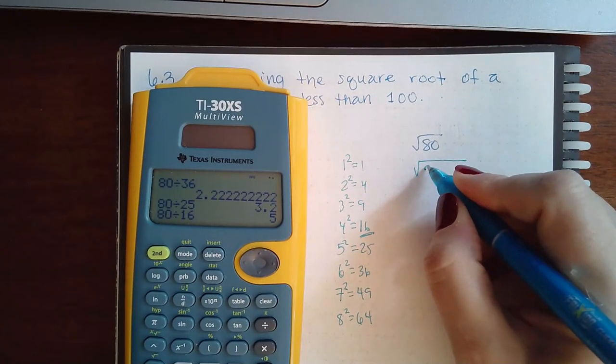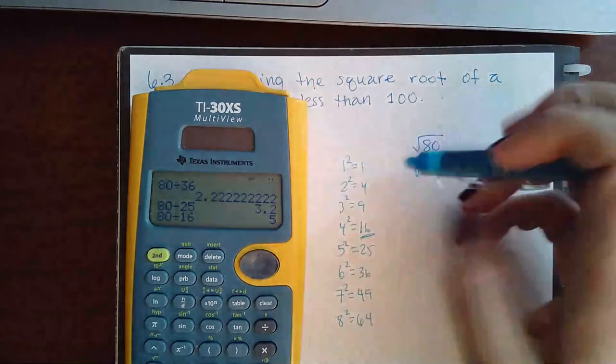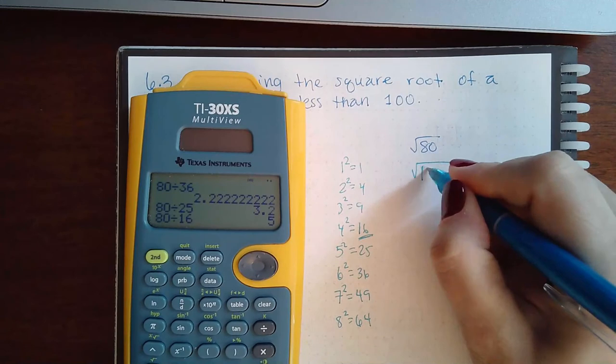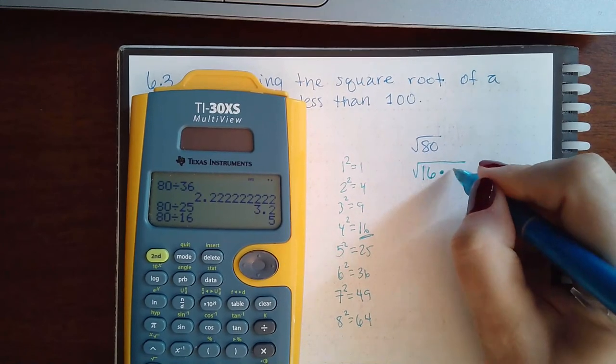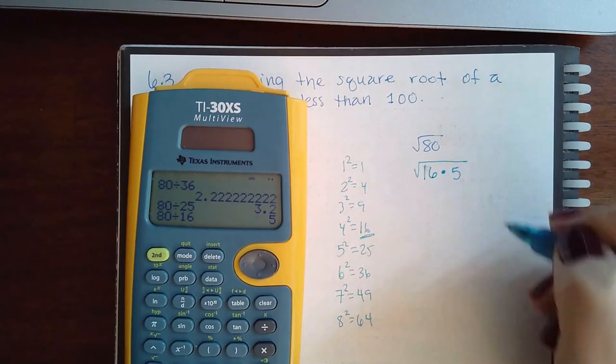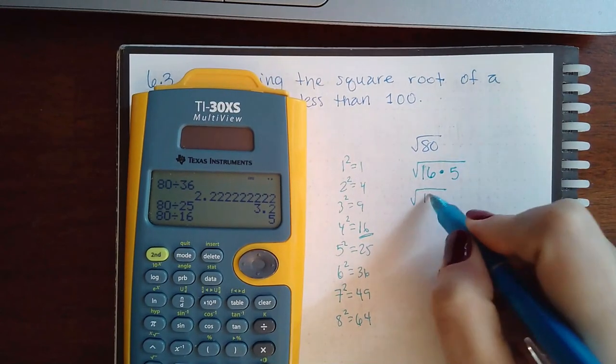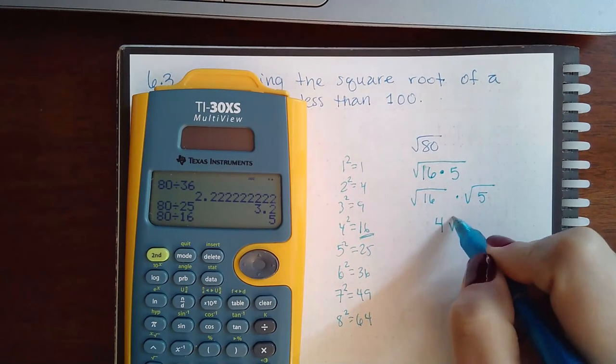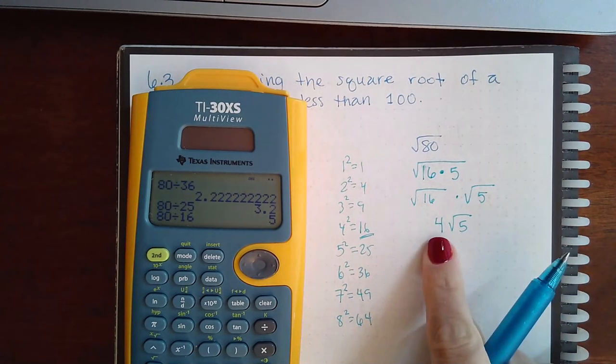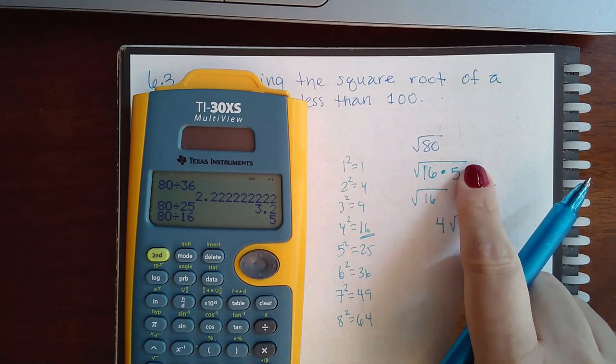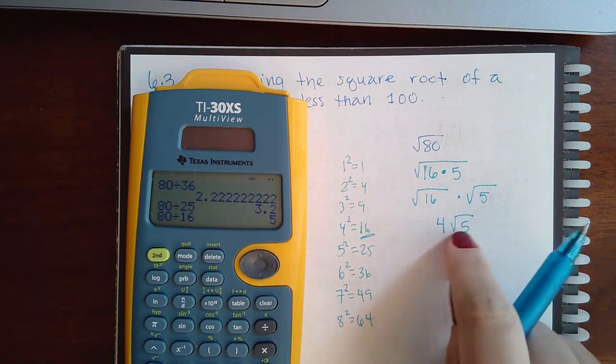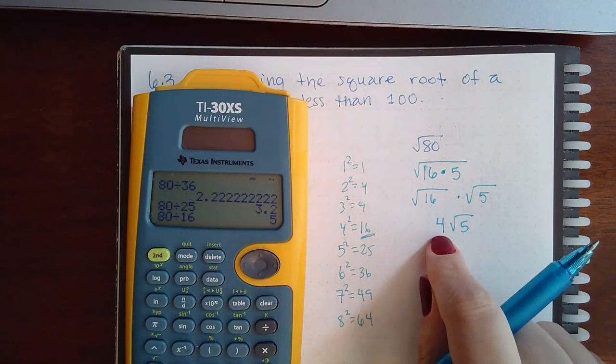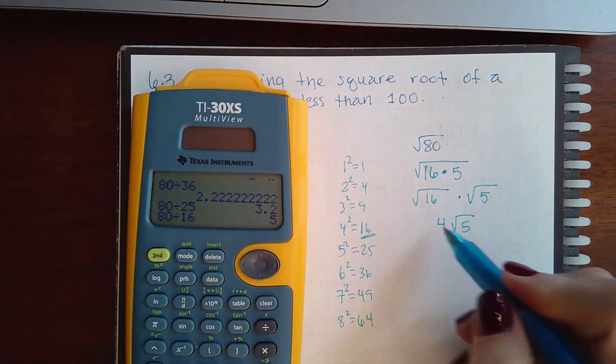This is the largest perfect square that goes into 80, and since I got 5, I know that 80 will break up into 16, the perfect square. For formality purposes, go ahead and put the perfect square first and then whatever you got next. That way when you separate them, the perfect square will come out and you'll already have that number in the front.